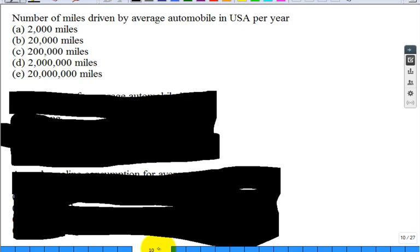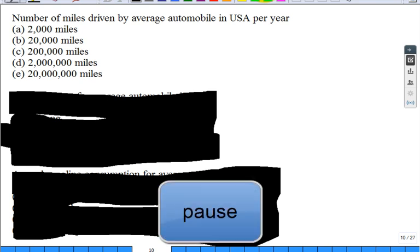Let's continue on. This is, I'm going to move through these next three questions a little quicker. Just answer the best you can. Maybe you drive an automobile. Maybe you own an automobile. Maybe you've ridden an automobile. Can you estimate the number of miles that the average automobile in the United States drives per year? Average. Does the automobile go 2,000 miles on average? 20,000? 200,000? 2 million? Or 20 million miles in a year?